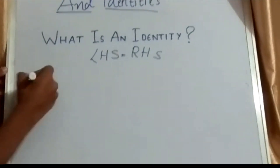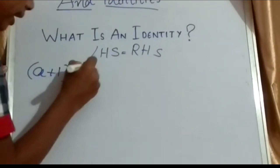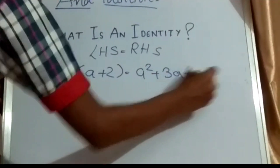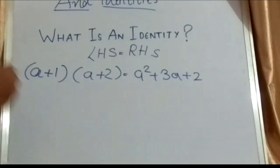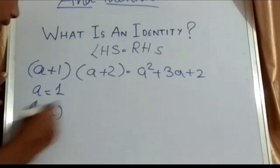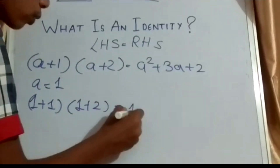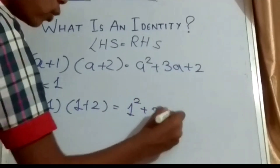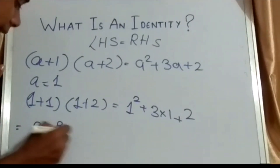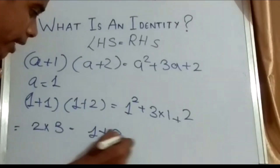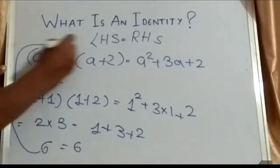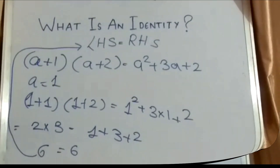Let's take an example. (A + 1)(A + 2) = A² + 3A + 2. If we give the value A = 1, we get (1 + 1)(1 + 2) = 1² + 3(1) + 2. That is 2 × 3 = 1 + 3 + 2, which gives 6 = 6, and LHS is equal to RHS.